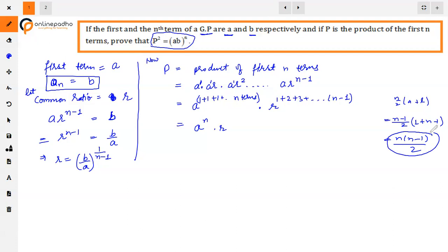Now put the R value: R equals B upon A raised to power 1 upon n minus 1. The power here is n into n minus 1 by 2. When the power comes again, it will multiply. So n minus 1 and n minus 1 cancel out, giving B by A raised to power n by 2.